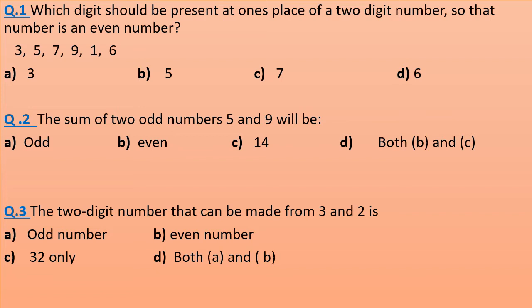Question 3: The two-digit number that can be made from 3 and 2 is: odd number, even number, 32 only, or both A and B?